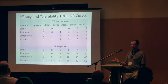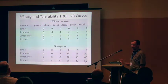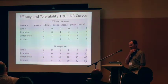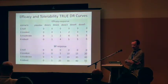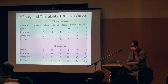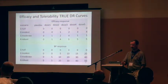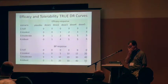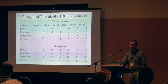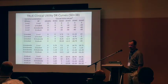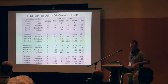The efficacy and tolerability true underlying curves used had four efficacy curves and four blood pressure response curves. Blood pressure increases with increasing dose, which is bad. Combining them yields this spectrum of clinical utility functions.